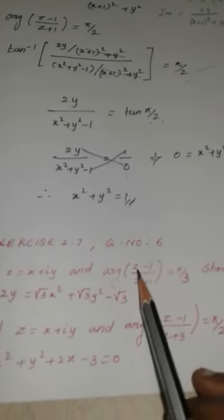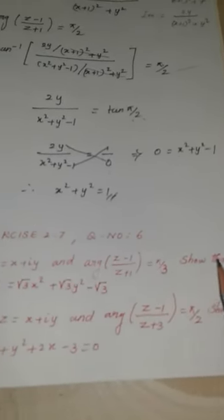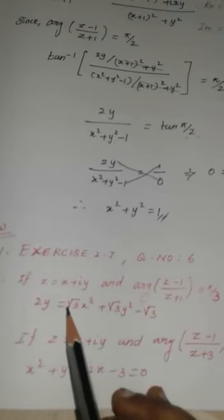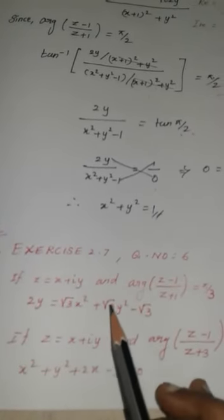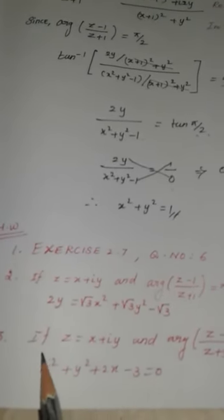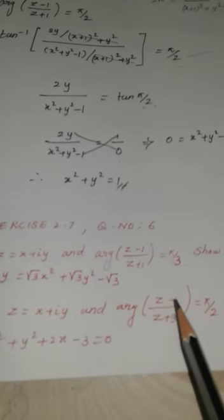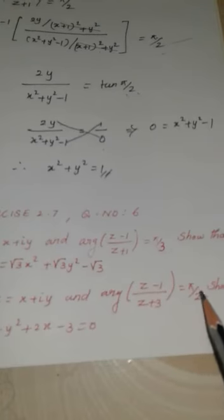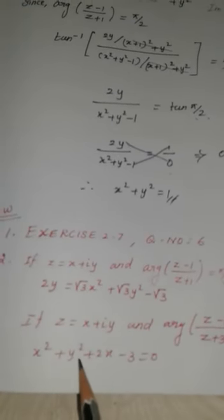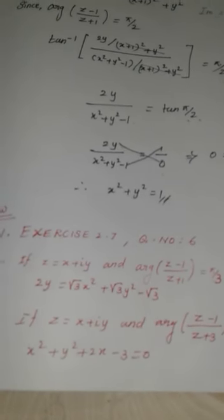Homework — Exercise 2.7, Question 6: If z = x + iy and arg((z−1)/(z+1)) = π/3, show that 2y = √3·x² + √3·y² − √3. Question 3: If z = x + iy and arg((z−1)/(z+1)) = π/2, show that x² + y² + 2x − 3 = 0. Thank you children.